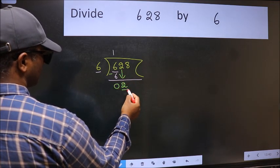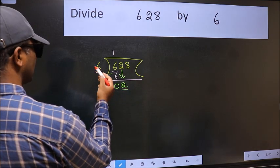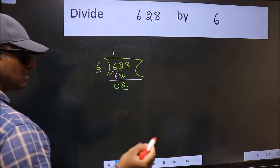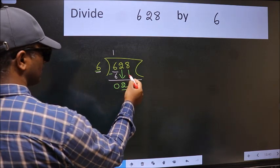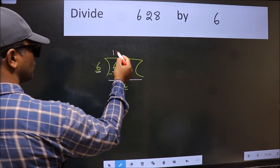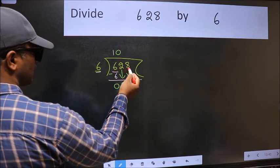Now here we have two, and here six. Two is smaller than six, so we should bring down the second number. The rule to bring down the second number is we should put zero here.